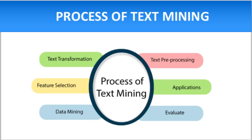The process of text mining begins with text transformation. Text transformation is a technique used to control the capitalization of text. Two major ways of document representation are bag of words and vector space. Next is text pre-processing, which is a significant and critical step in text mining.